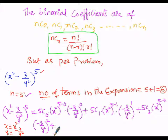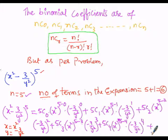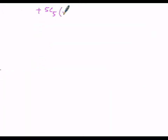The fourth term is 5C3 times (x²)^(5−3) times (−3/y²)^3, plus 5C4 times (x²)^(5−4) times (−3/y²)^4, and the last term is 5C5 times (x²)^(5−5) times (−3/y²)^5.